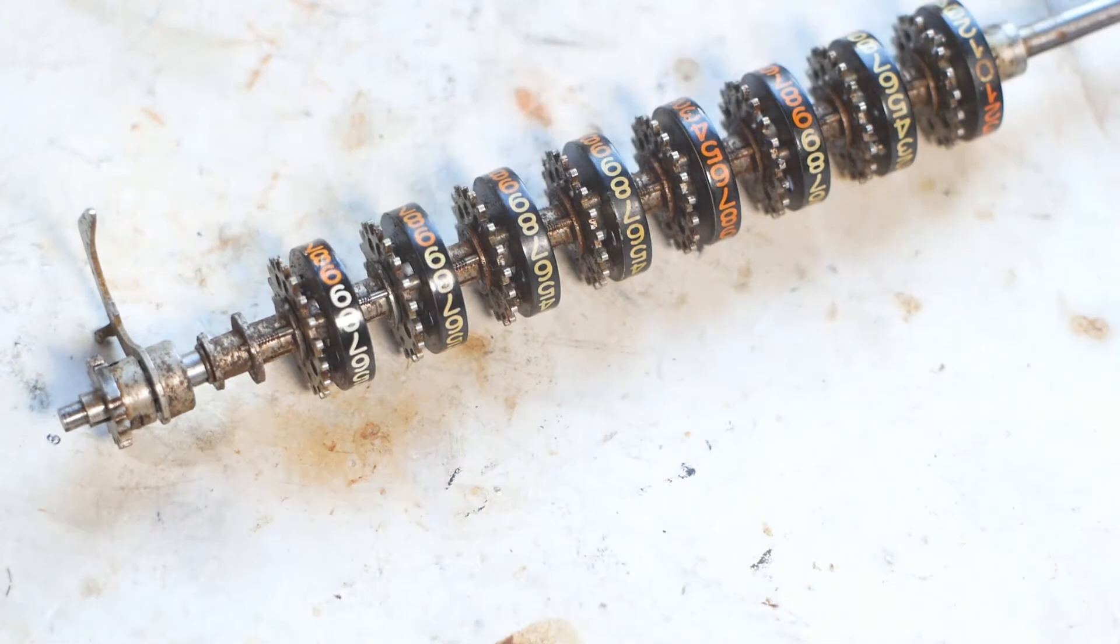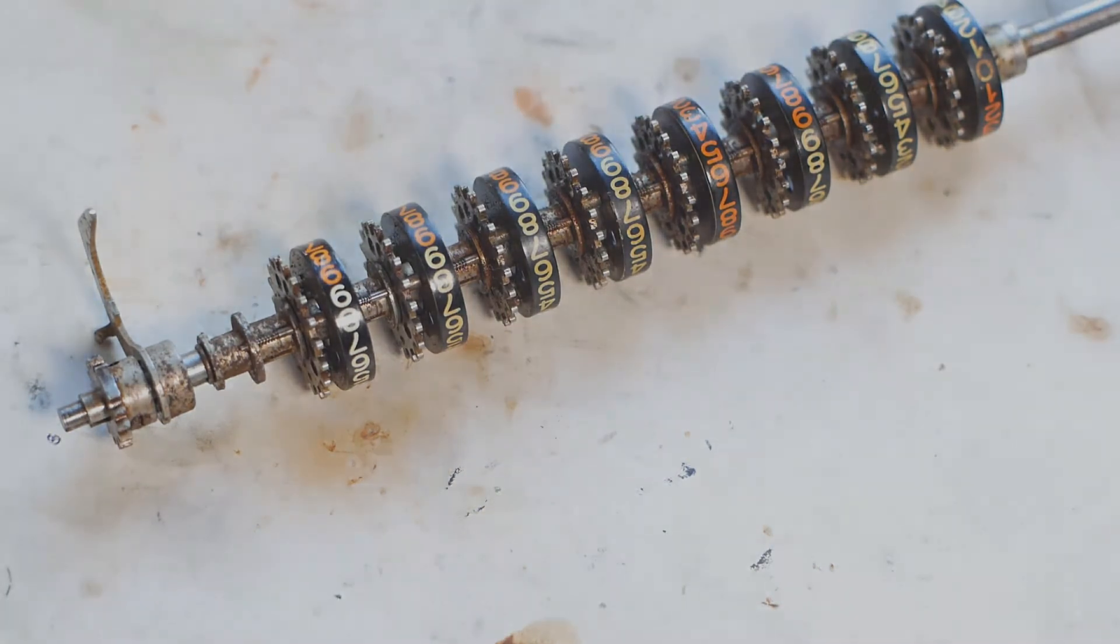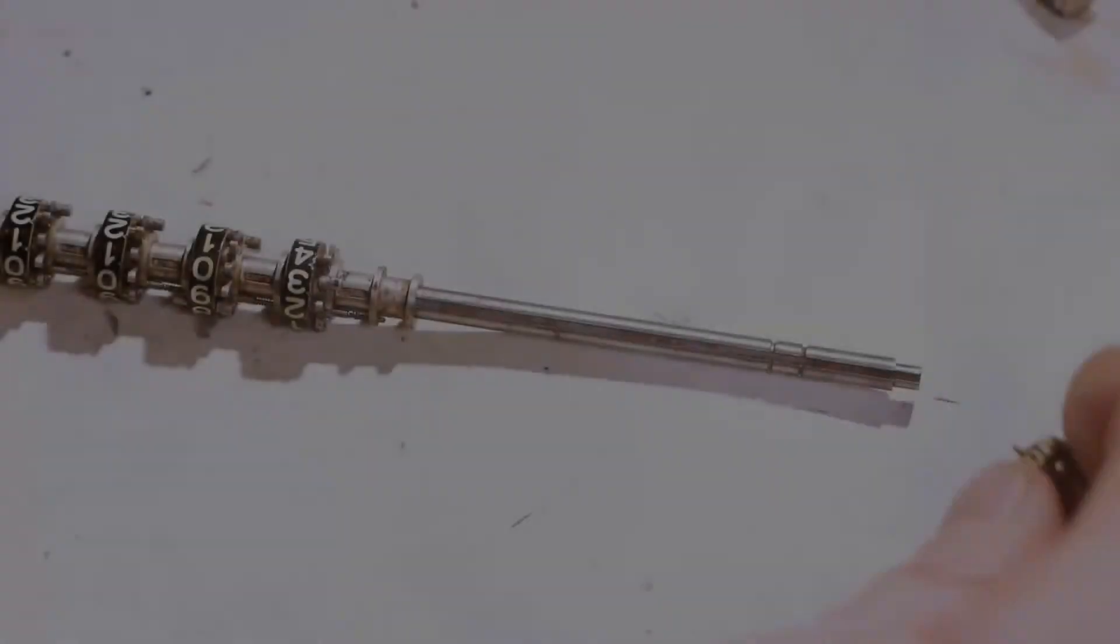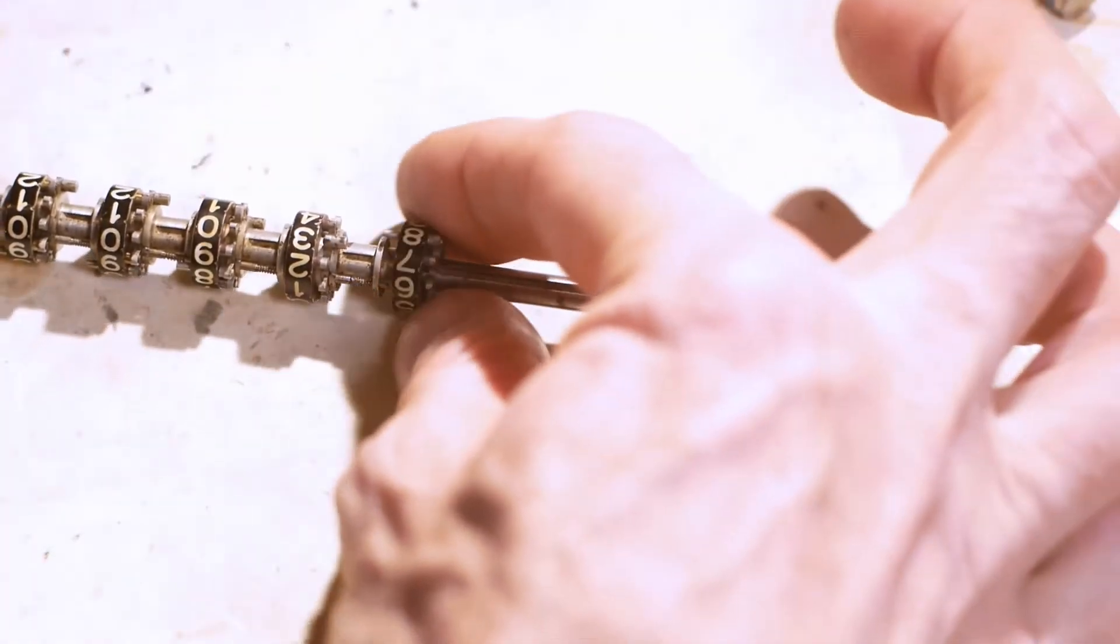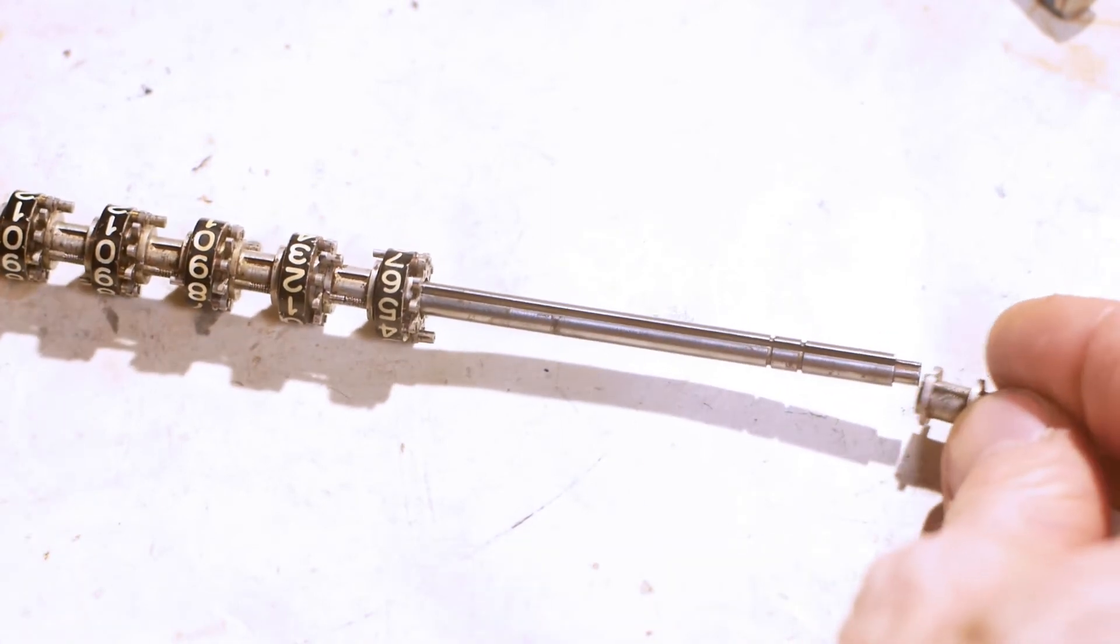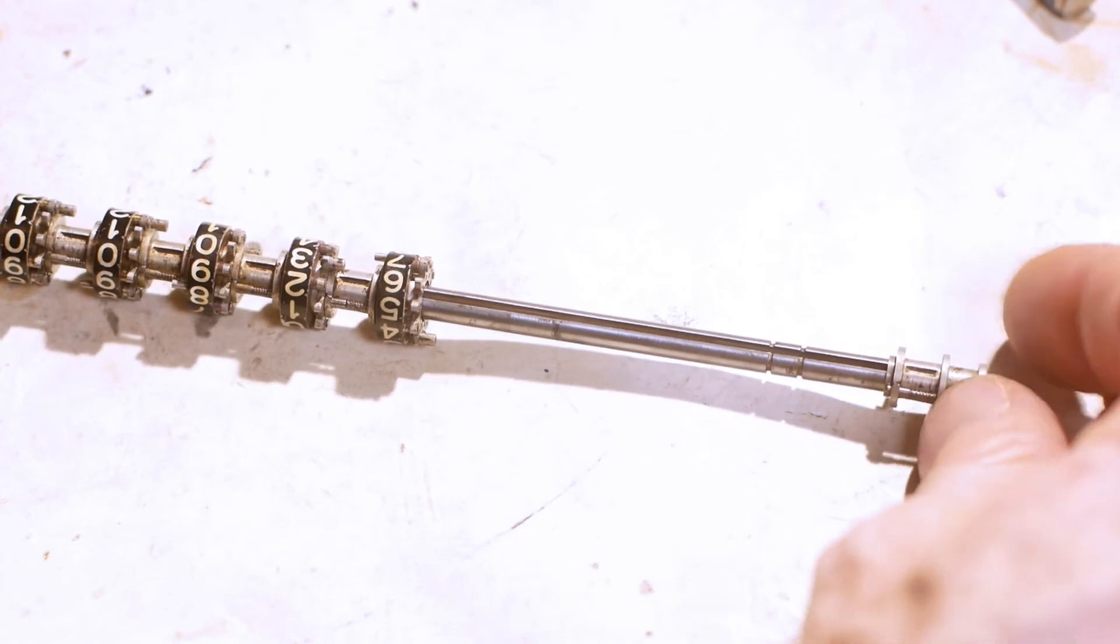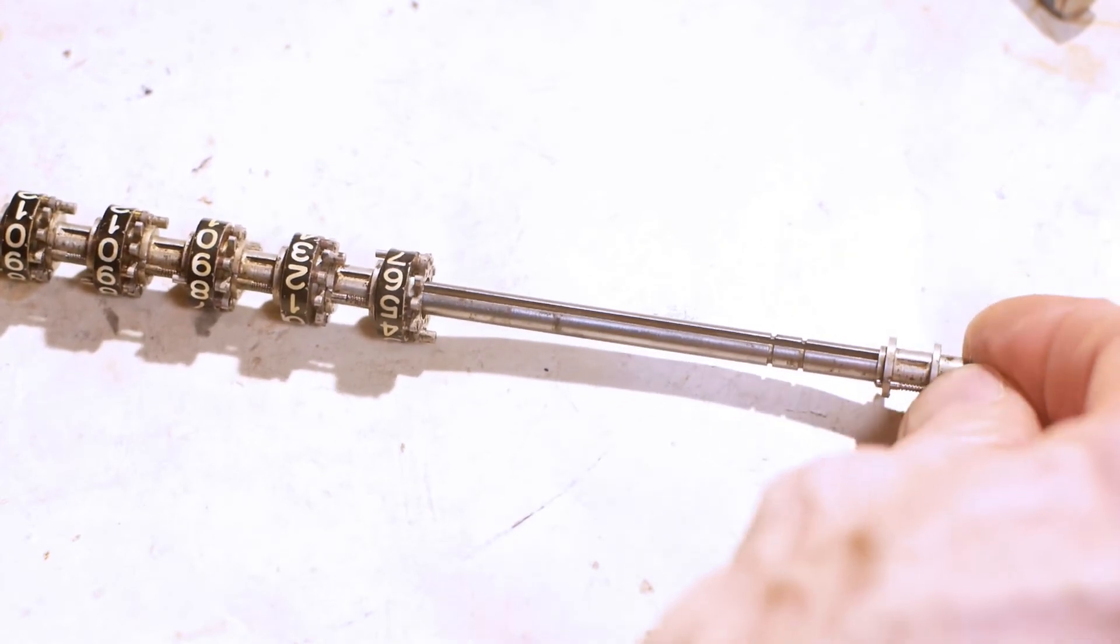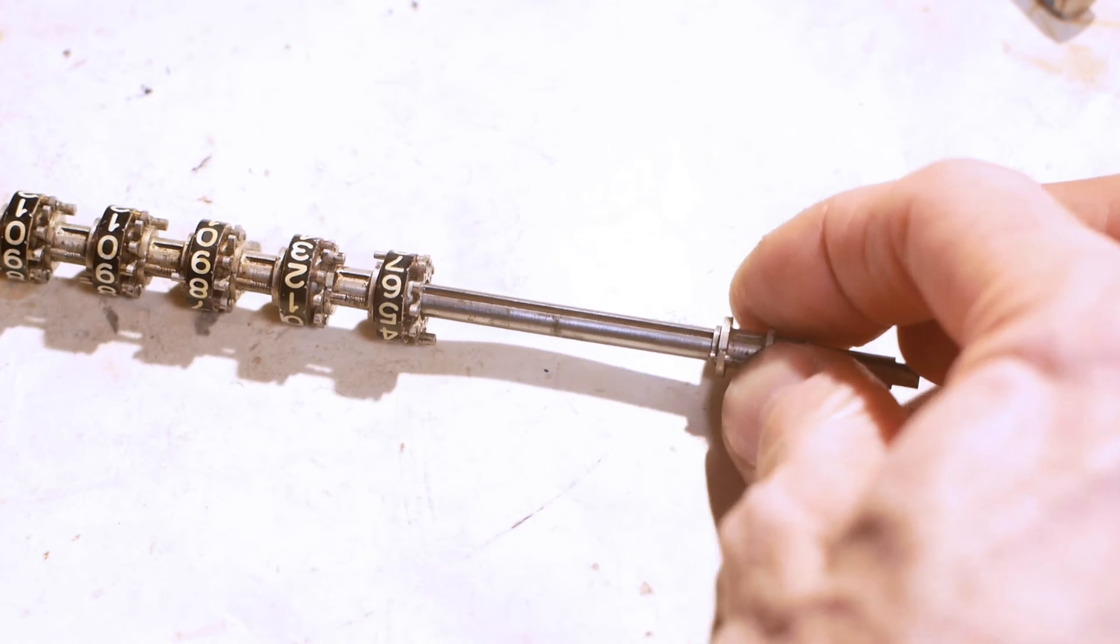Next task is to free up the jammed wheels on the output register. I've now freed up the seized wheels on the output register. In each case, it was the indexing pin that was stuck solid. Once each collar was removed, I had to drift the pin out to free it up.